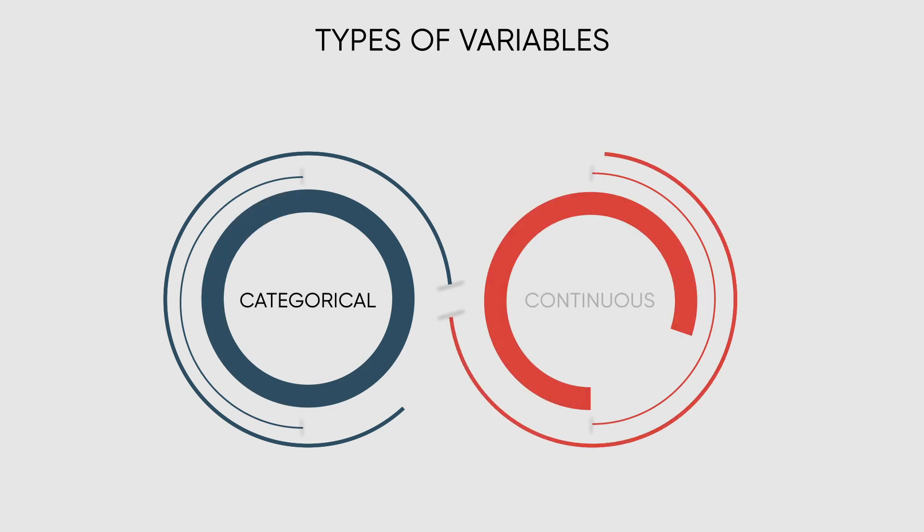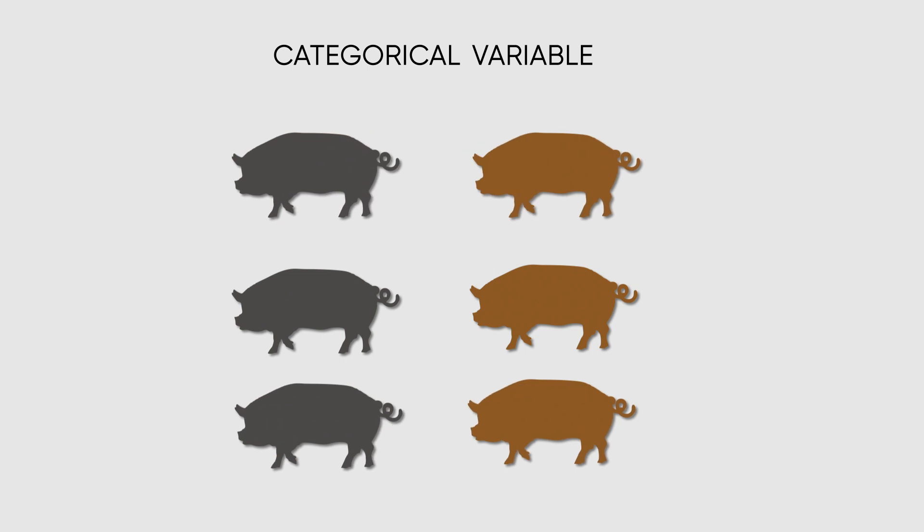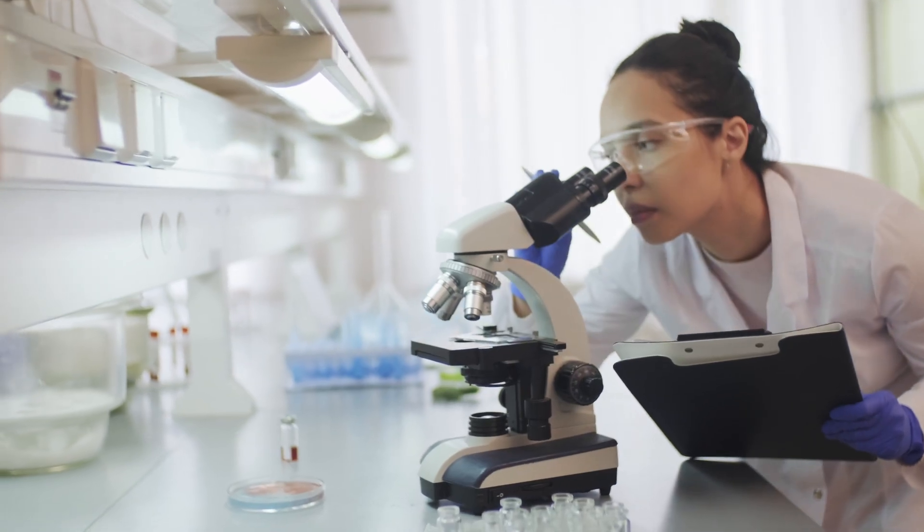Variable can be of different types such as categorical where subjects are placed into different groups, or continuous such as weight or height where variable could have any value.